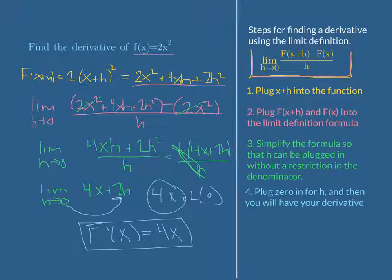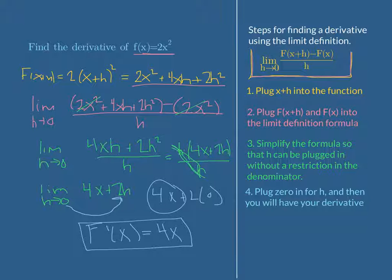The derivative of f of x equals 2x squared at any x point is f prime of x equals 4x. That means you can plug any x value into the derivative and get the rate of change, or the slope of the tangent line at that point. If you feel like you've got the concept down, you can stop watching the video now. I'm going to do just a couple more problems so that you can see them if you want to.